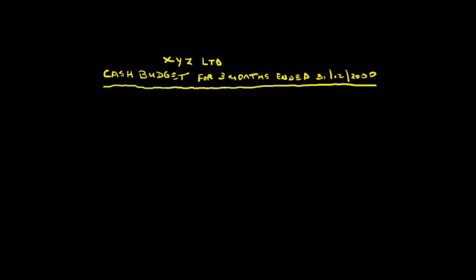So now anyone reading this knows who it is, whose cash budget it is, and what period of time we're talking about. With a cash budget, we're going to do it on a monthly basis — we're going to set up a table here with columns.